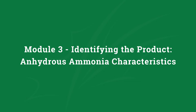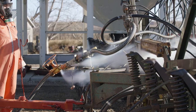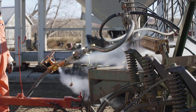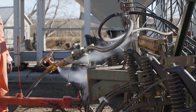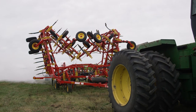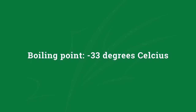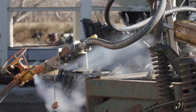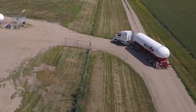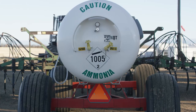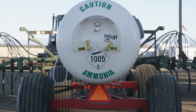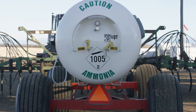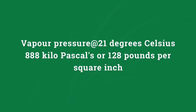This section provides information on the basic properties of anhydrous ammonia. In order for anhydrous ammonia to be used in its liquid state, it must be converted from gas to liquid. The boiling point of anhydrous ammonia is minus 33 degrees Celsius. Because of this low boiling point, anhydrous ammonia will immediately vaporize when released from its containment. To keep anhydrous ammonia in a liquid state, it is stored and transported under pressure. The vapor pressure at 21 degrees Celsius is 7,500 millimeters of mercury, or 9.8 atmospheres — equivalent to 888 kilopascals or 128 pounds per square inch.